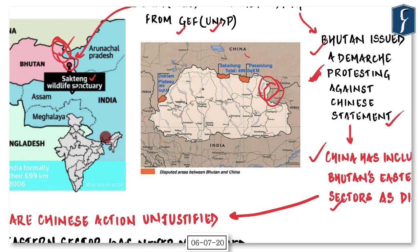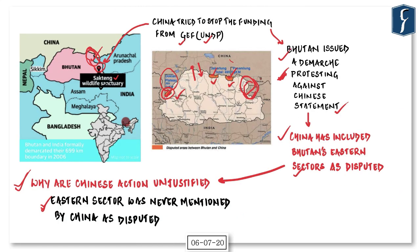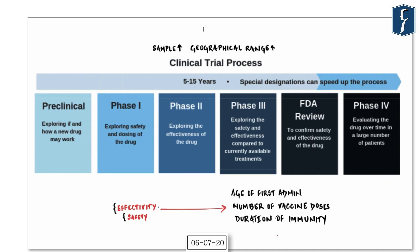All 24 rounds of talks between China and Bhutan focused on specific areas of Jakarlung and Pasamlung in the north and Chumbi Valley in west Bhutan — where Doklam is also situated. Chinese officials never mentioned the eastern territory in those talks. This is another instance of China raking up issues with almost all its neighbors, giving credence to India's statement that China is pursuing a policy of expansionism.